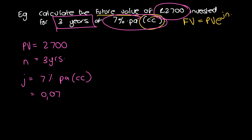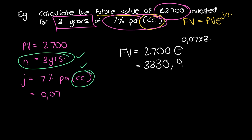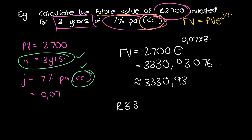We check that our units for n correspond with the compounding period. Since it's CC, n must be in years — and it is, so we're sorted. Putting it into the formula: FV equals 2700 times e^(0.07 × 3). Entering this into the calculator gives 3330.93076..., which we round to R3330.93.